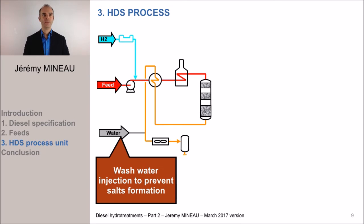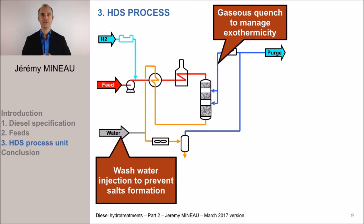Finally, we separate the water, the hydrogenated product and the excess of hydrogen. The hydrogen is partially purged and the excess is recycled by a compressor. A part of this recycled hydrogen is used as a gaseous quench to manage the exothermicity of the reactions. Let me remind you that all the reactions occurring in the reactor are exothermic. Another part of this hydrogen is recycled towards the mixture of feed plus hydrogen.